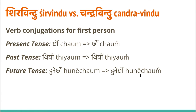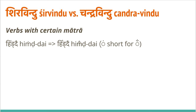Similarly for past tense, 'yong' should be written explicitly with chandrabindu, but it is usually written with a dot (sirvindu). The pronunciation is the same. You need to realize that if there is a dot at the end of a verb conjugation, it's just a short form of chandrabindu — it's not sirvindu. Similarly 'hunechong' is written this way. When a matra is involved, like bimatra, there is very little space for chandrabindu, so putting a dot is easier — that's why we use the dot as a short form.